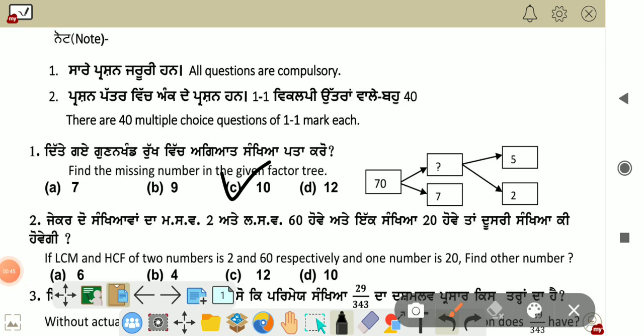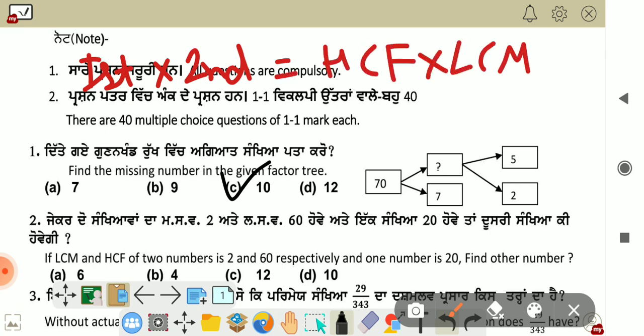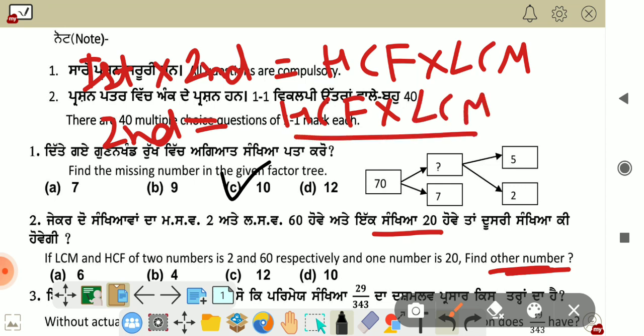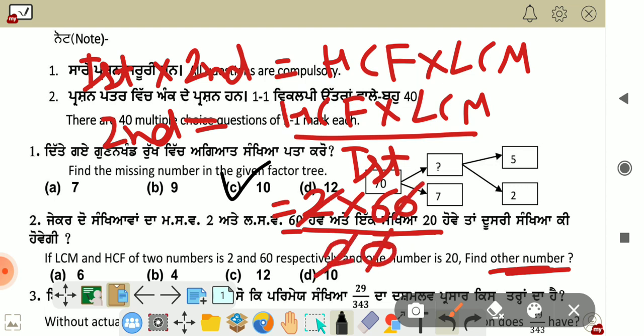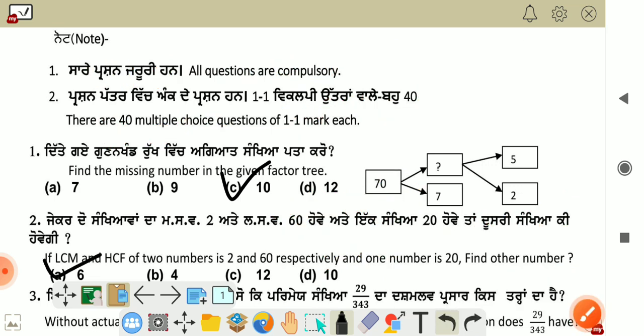Next. If LCM and HCF of 2 numbers is 2 and 60 respectively and one number is 20, find the other number. We have a formula: first number into second number is equal to HCF into LCM. The second number equals HCF into LCM divided by first number. HCF is 2, LCM is 60, first number is 20. This cancels out, we get 6. So the second number is 6.